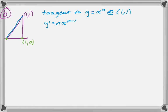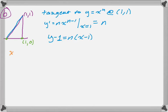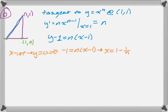I find the derivative using the power rule — bring down the exponent, subtract 1. I evaluate that at x equals 1, which gives me just n. I write the equation of the tangent line in point-slope form. Then I need the x-intercept, so I set y equals 0: negative 1 equals n times the quantity (x minus 1). Solving for x gives me the x-intercept, so now I know the coordinates of both points.